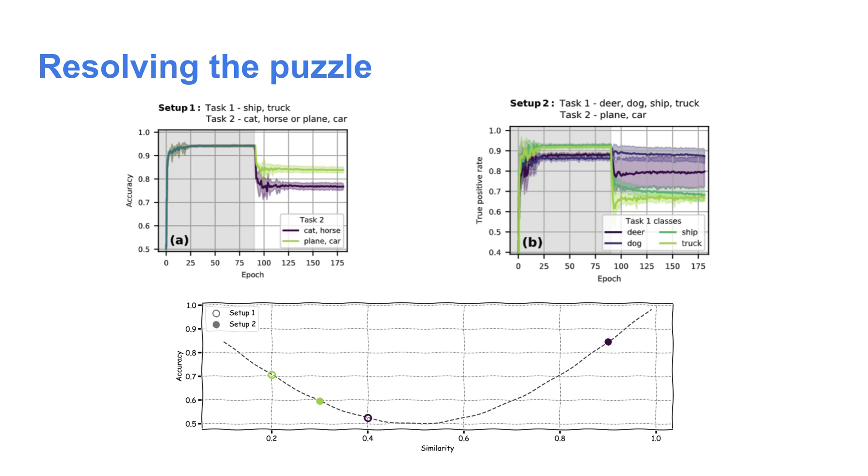Because we'd never seen animals before task two. So here we lie on the low similarity part of the curve. And thus, the increasingly dissimilar animal representation causes more forgetting than the similar vehicles representations.